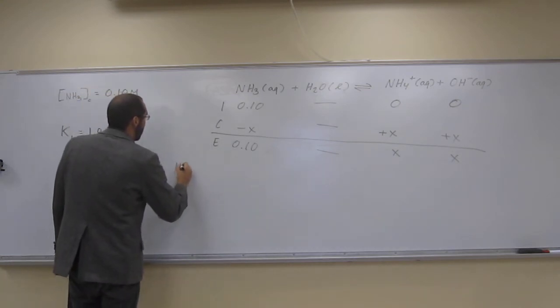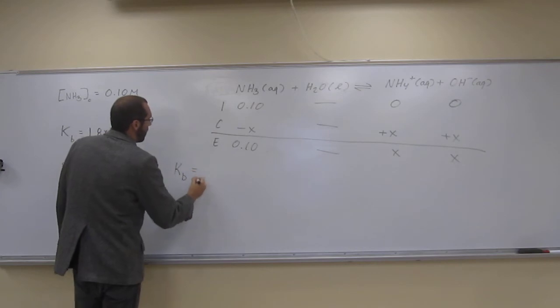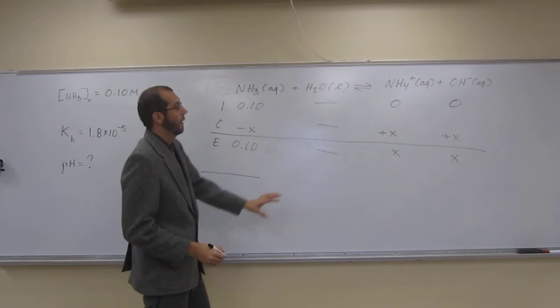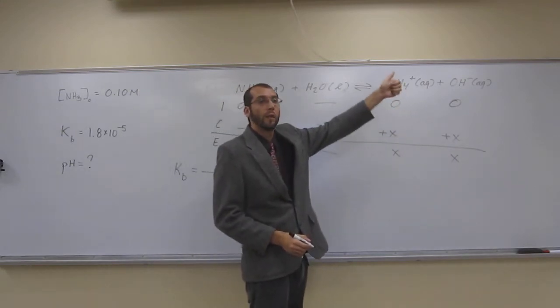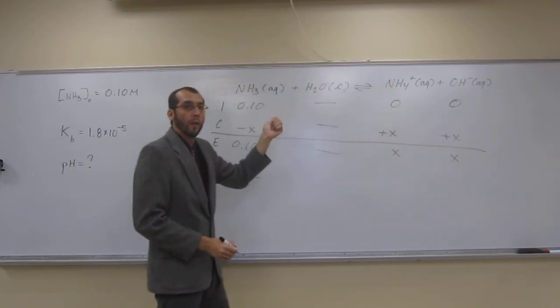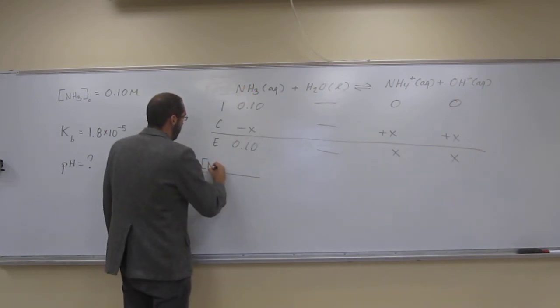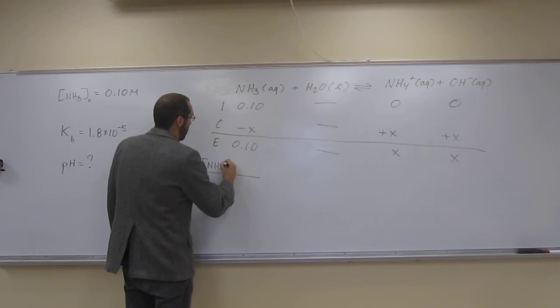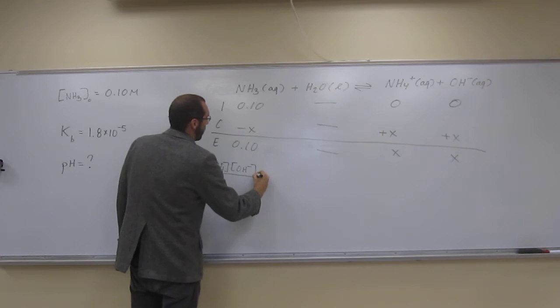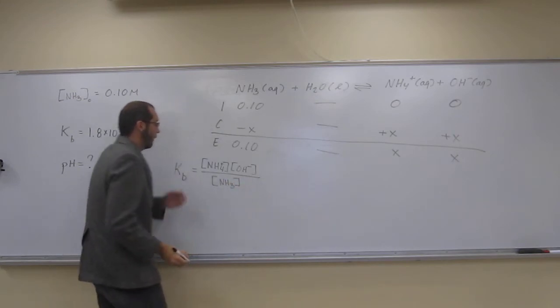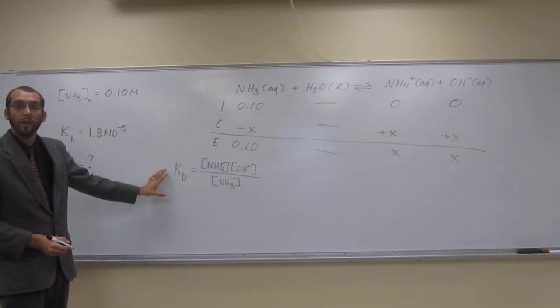So that reduces our Kb equation. So let's solve, let's write out our Kb equation. So just like anything else, it's going to be the products raised to their coefficients divided by the reactants raised to their coefficients. What have we got? Concentration of the ammonium ion times the concentration of hydroxide ion divided by the concentration of ammonia.